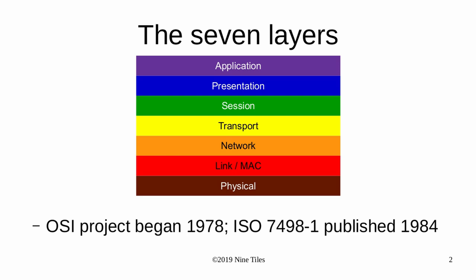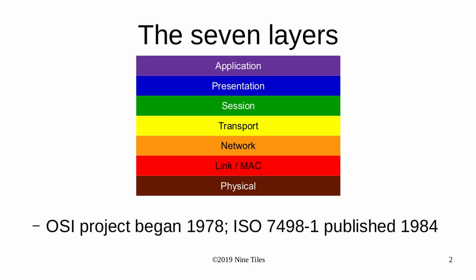I thought I should put up the diagram of the dreaded seven layers, which the younger ones might not recognize. What I want to talk about is Econet, Cambridge Ring, and Multilink.